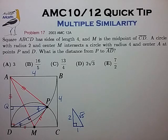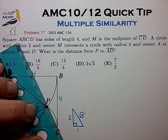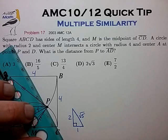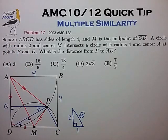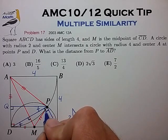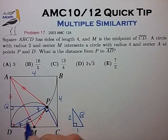And in fact, we can actually generate one additional similar triangle by drawing in line segment PC, which is also a right angle to line segment DP.